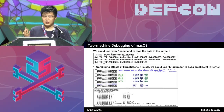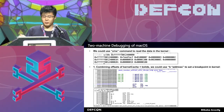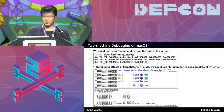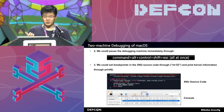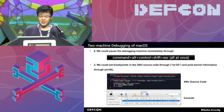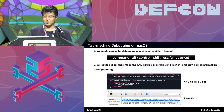We have three ways to set breakpoints in the kernel. We can use B asterisk address to set a breakpoint in LLDB. We need to use the offset of the kernel cache plus the kernel slide to calculate the address. Another way to pause the debugging machine is to use a shortcut key: Command + L + Control + Shift + ESC all at once, and it will pause the debug machine immediately.